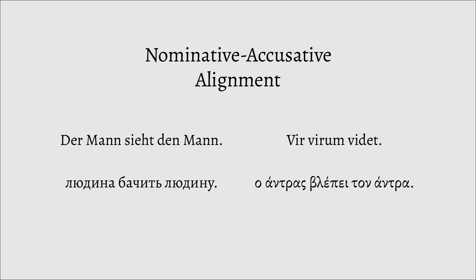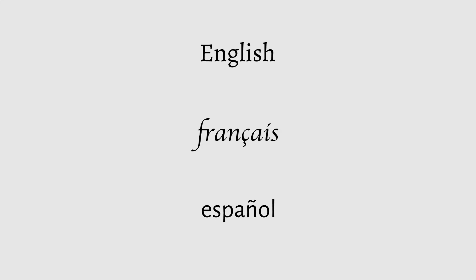To some of you, those terms may seem familiar, especially those who study German, Ukrainian, Latin, or Greek, as they are the names for two types of cases found in those languages that mark the subject and object of a sentence respectively. However, even if you don't speak a language with a case system, like English, French, or Spanish, it's still an intrinsic part of grammar you use every day.